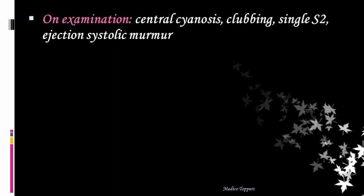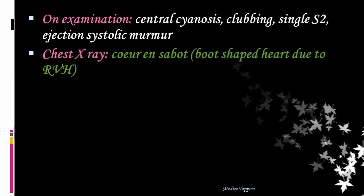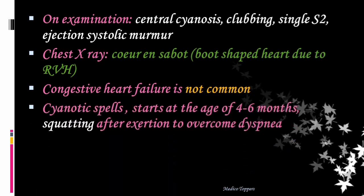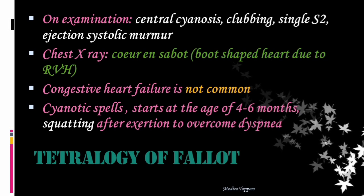On examination we find central cyanosis — this is the most common cyanotic heart disease. We see clubbing, single S2, and ejection systolic murmur. On chest X-ray we see coeur en sabot, that is boot-shaped heart, mainly due to right ventricular hypertrophy. Congestive heart failure is not common, which is an important MCQ point. Cyanotic spells are seen in children aged four to six months, and children sit in squatting position to overcome dyspnea. The condition is tetralogy of Fallot.